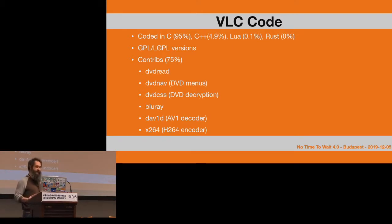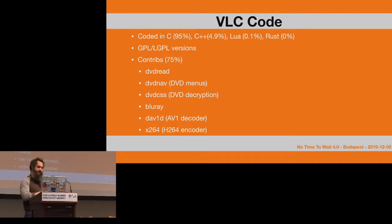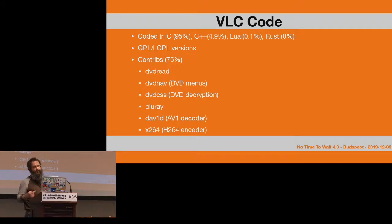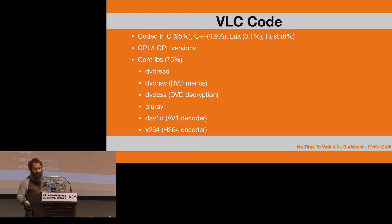VLC has two different licenses. The one you download from our website is the GPL version, which has all the features. There's also an LGPL version where GPL code is removed — if you use that version and make modifications to the code, you can keep them private. If you use the GPL version and make changes or additions to VLC, you need to publish those changes publicly. Depending on your needs you may need one or the other, but most people just use the GPL version and have full features.